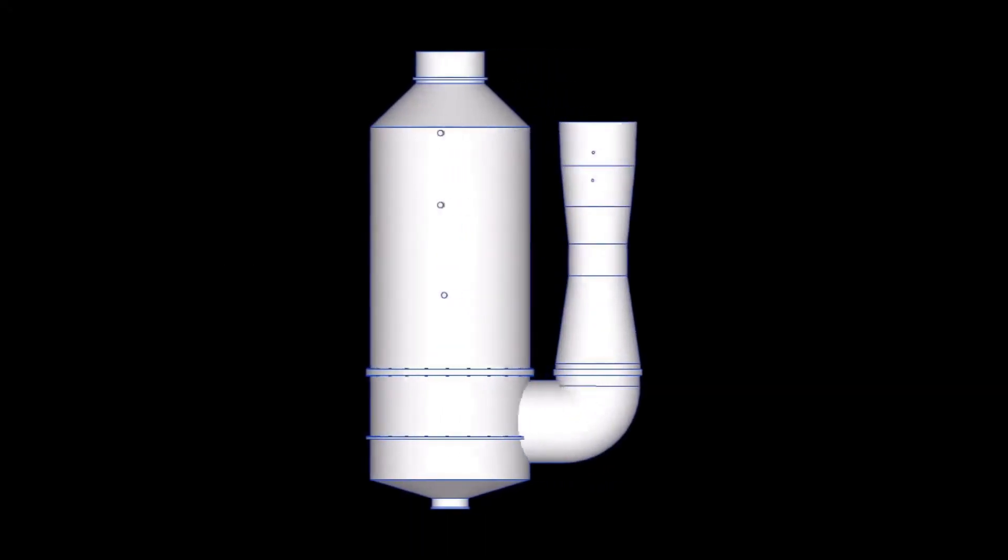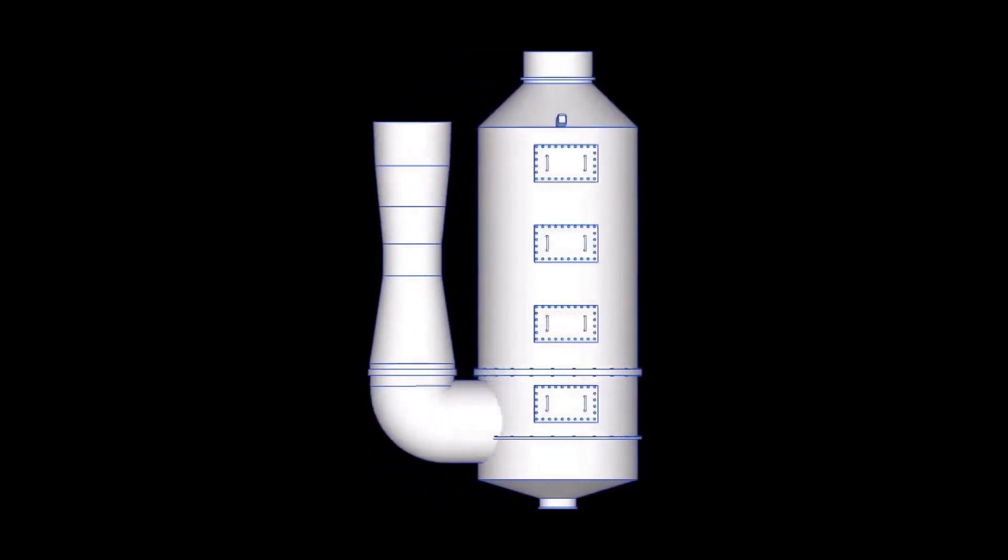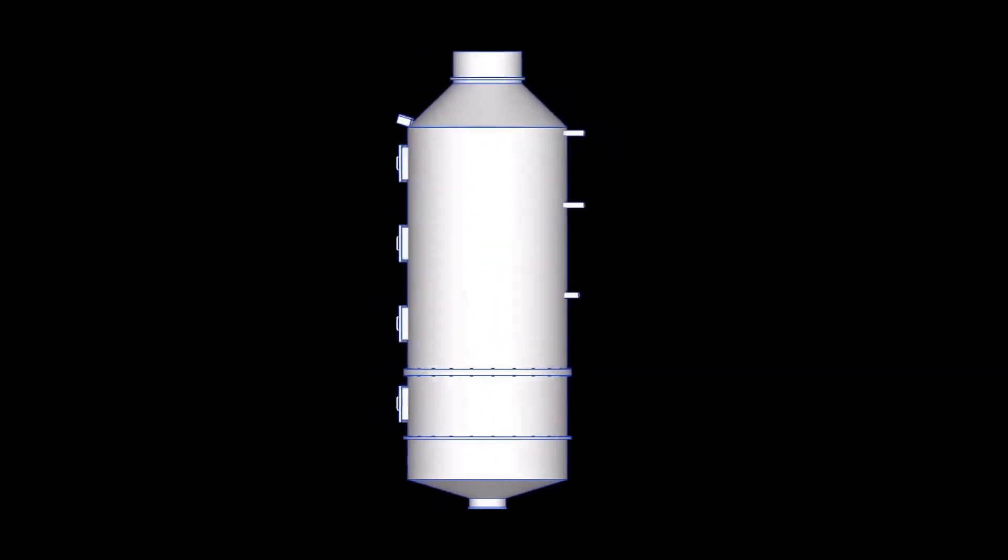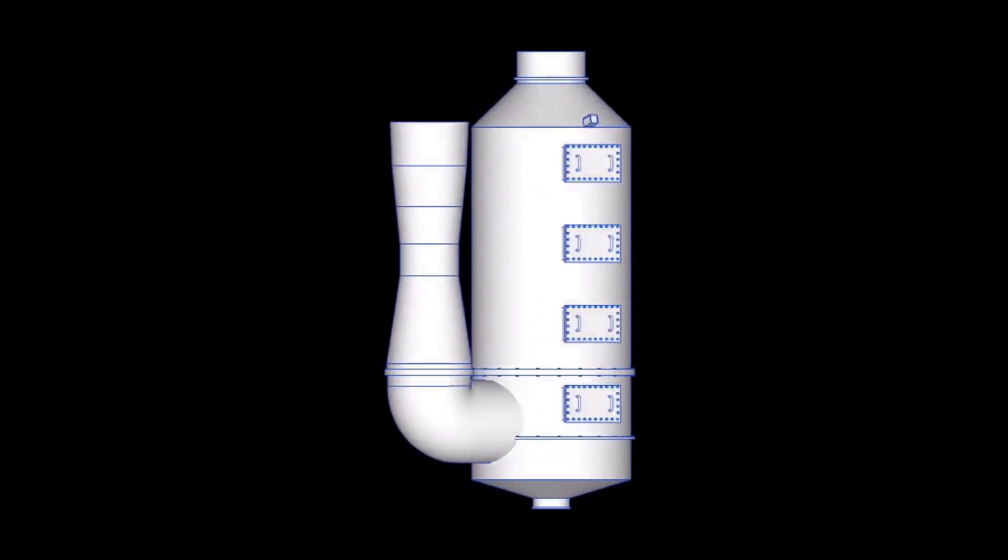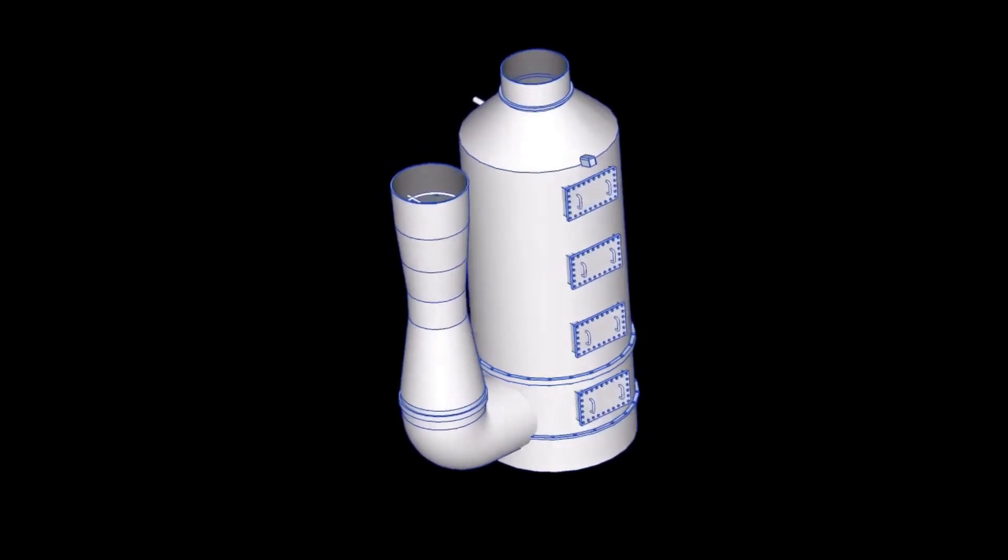The scrubber tower is the main component of the EGCS. Its body is made up of stainless steel to protect itself from the corrosive effect of sulfuric acids which is the by-product of sulfur and sea water.